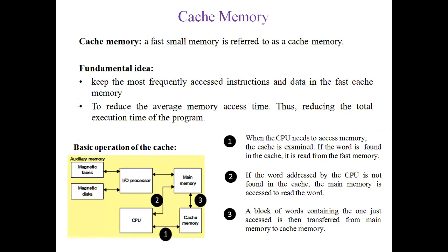The basic operations of cache involve three steps. Step 1: the CPU checks the cache memory — if the word is found, the CPU reads from the fast cache memory. Step 2: if the word is not present in the cache, the main memory is accessed by the CPU to read the word. Step 3: when the CPU accesses main memory to get data, that address-data pair is transferred from main memory to cache memory for future use.